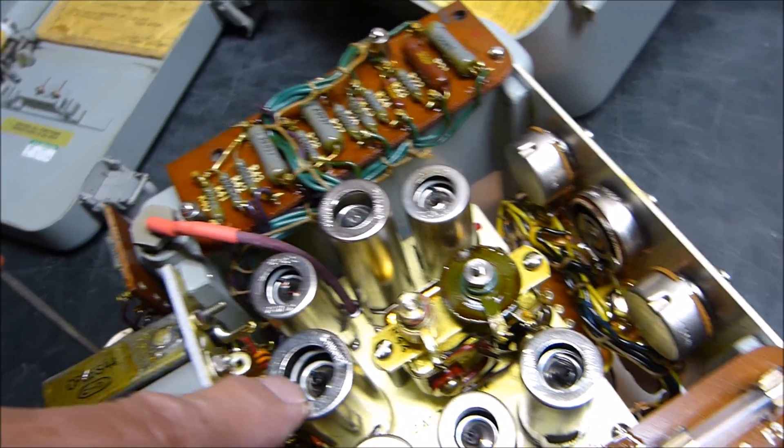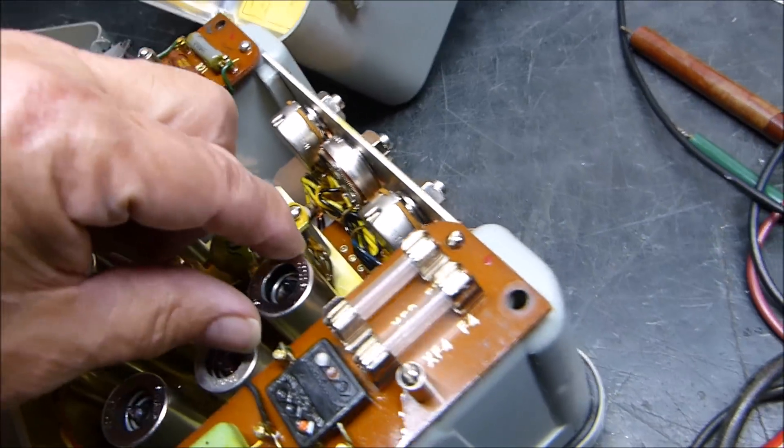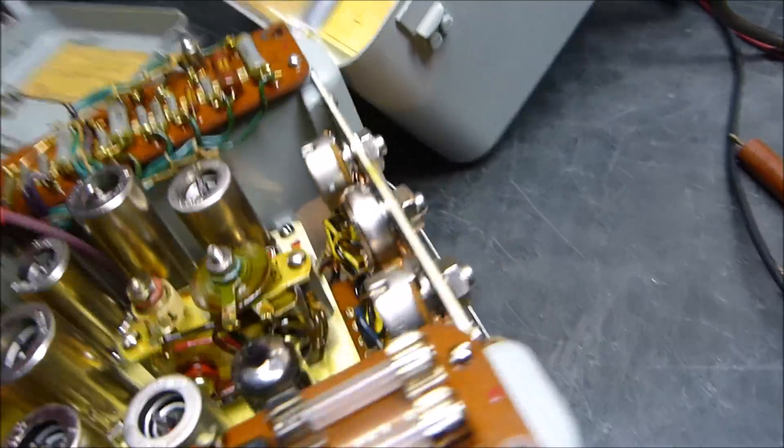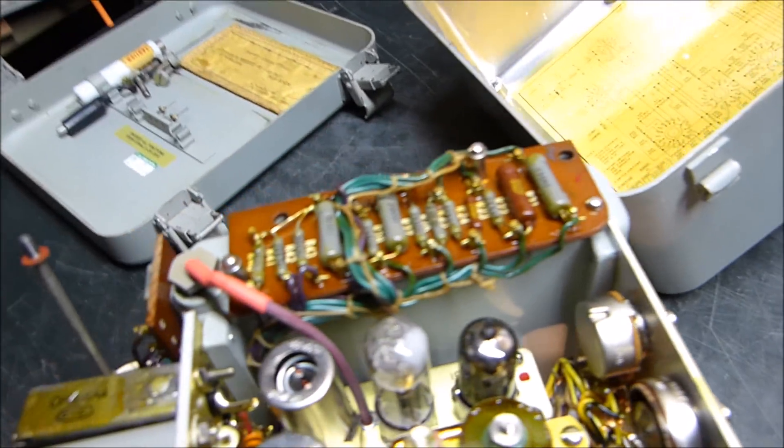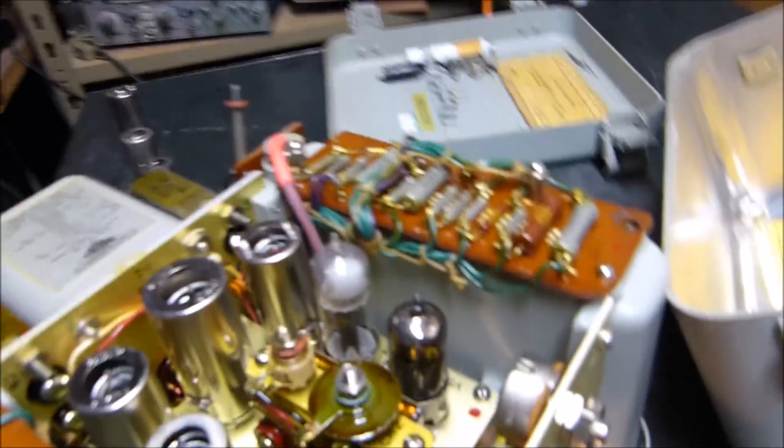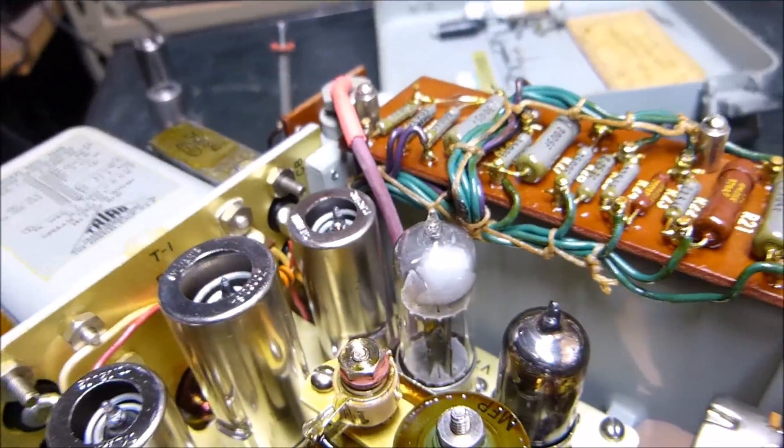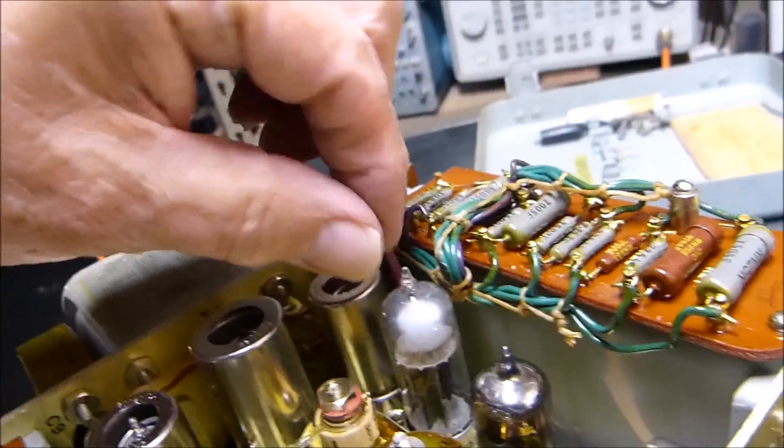5651, 5651, 6X4, 12AT7, 6AU6. It's got a rectifier there, 6AL5, 12AT7, the 6X4, a couple of 5651s - I'm not sure what they are. Oh, they're VR tubes. Oh that's interesting, the VR tubes are out. Well what about the rectifier? Well that doesn't look right. Look at there, it's white, it's not lit.